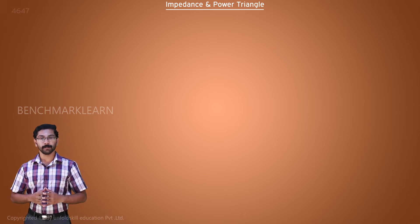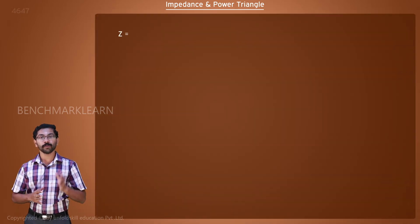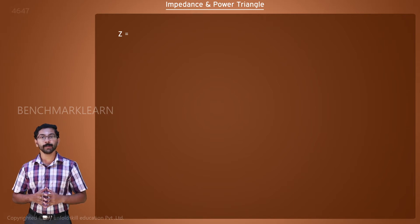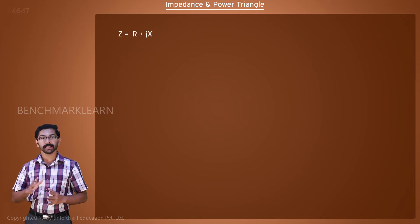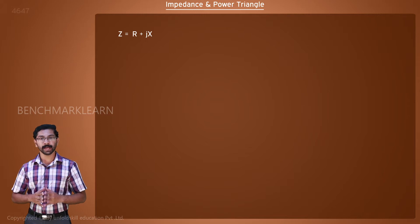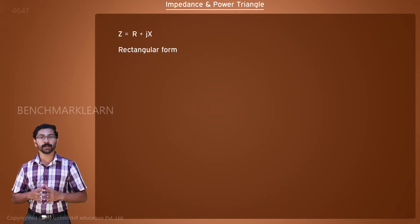Impedance and Power Triangle. The total impedance of an AC circuit is represented by a complex number. The real part is formed by the resistor and the imaginary part is formed by the inductor or capacitor. This representation is known as the rectangular format.